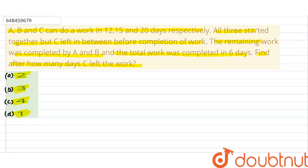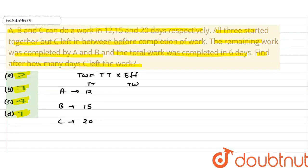So solve करते हैं। सबसे पहले हमें पता है कि total work क्या होता है? Total work होता है total time into efficiency। यहाँ पर हमें given है: A किसी काम को करता है 12 दिन में, B उस काम को करता है 15 दिन में, और C उस काम को करता है 20 दिन में। तो total time given है, तो हम total work निकाल लेंगे। Total work क्या हो जाएगा इनका? LCM — तो total work मान लिया हमने 60।